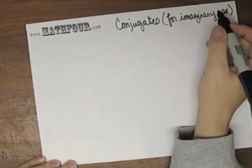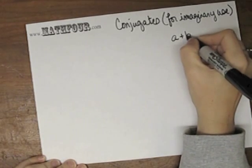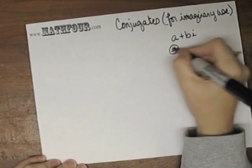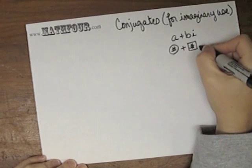In imaginary numbers or complex numbers, we like to have things in the form of A plus Bi, which means some number, let's call it with a circle around it, and another number, like with a square around it, times i.